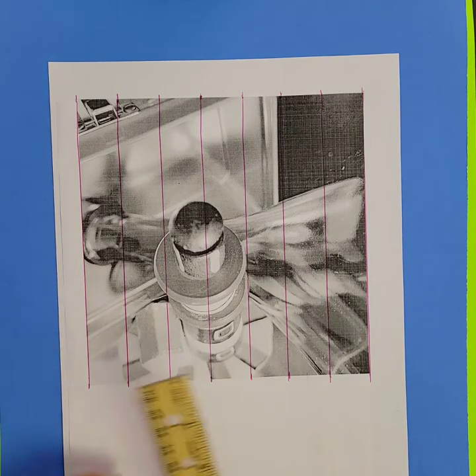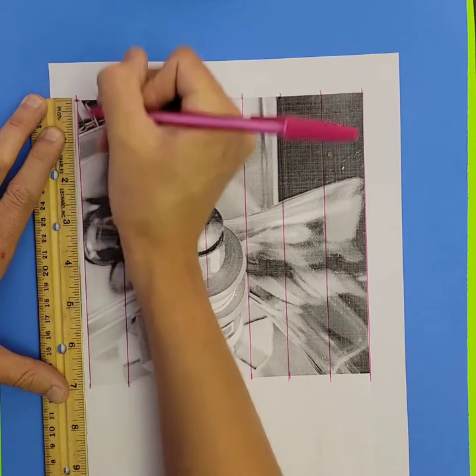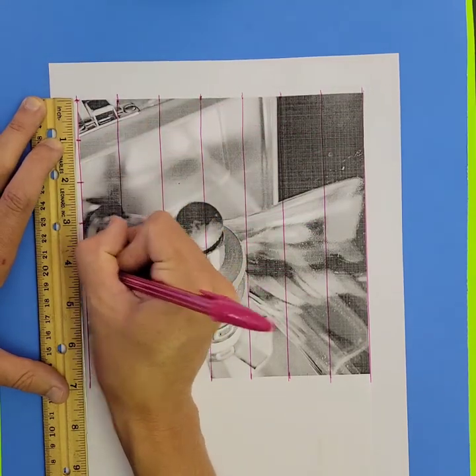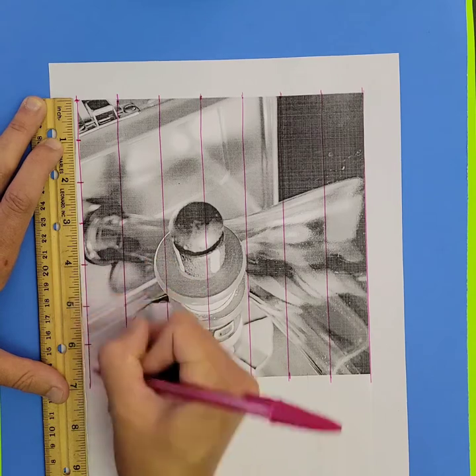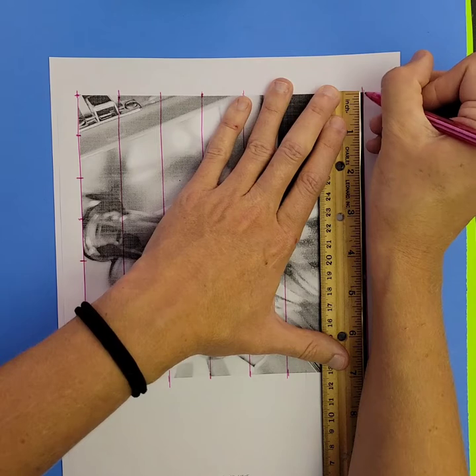And now to finish the grid, I'll just need to do the same thing on the left and right sides. Just every inch down the left side and every inch down the right side.